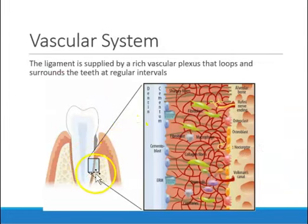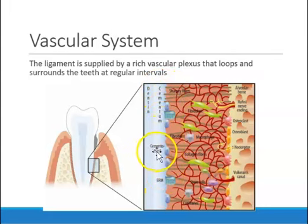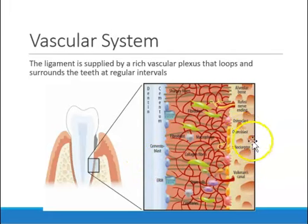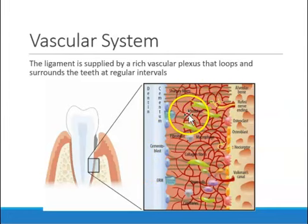Within the periodontal ligament fibers — with cementum on one side and bone on the other — there are several cell types. Near the cementum are cementoblasts, which make cementum. On the opposite end are osteoblasts, which make bone, and osteoclasts, which resorb bone. We also have cementoclasts, which resorb cementum. Interestingly, fibroblasts do both — they make fibers and they destroy fibers.